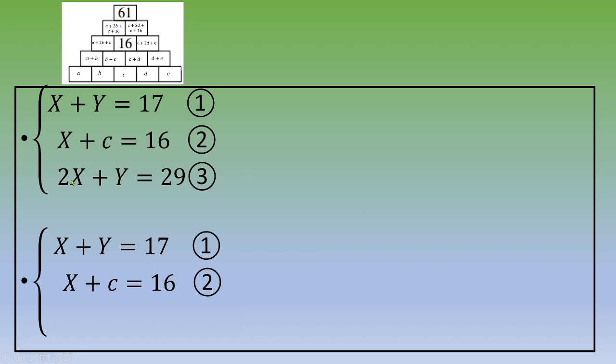And to get the value of x, let's make this operation, equation number three minus equation number one. So this is 2x minus x, this is x, y minus y, this is zero, and 29 minus 17, this is 12.